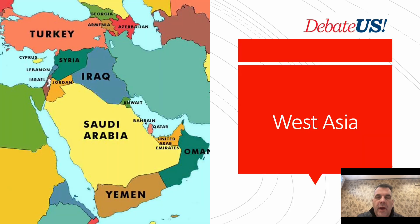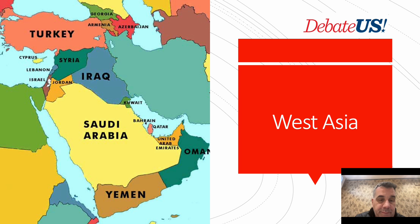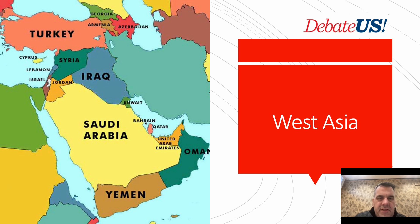West Asia is really the area most people would consider the Middle East — the Gulf region and just above it. It includes Saudi Arabia, Yemen, Oman, the United Arab Emirates, Iraq, Syria, Jordan, Israel, Lebanon, Turkey, Armenia, and Azerbaijan. Iran, shown in light green near the top right of the map, plays a very big role in these conflicts.